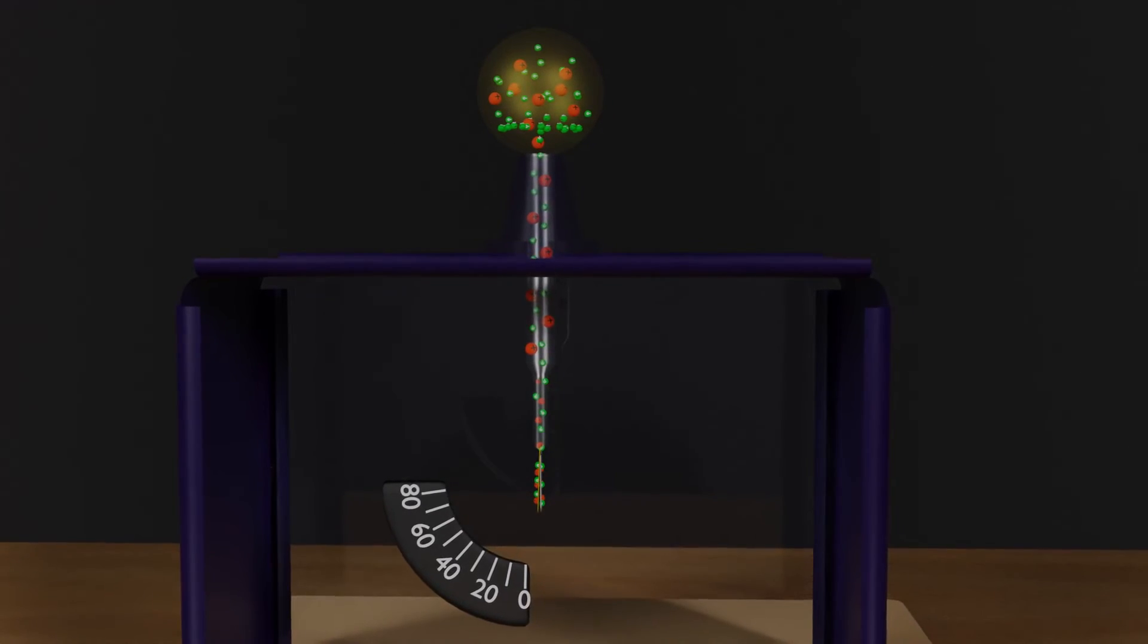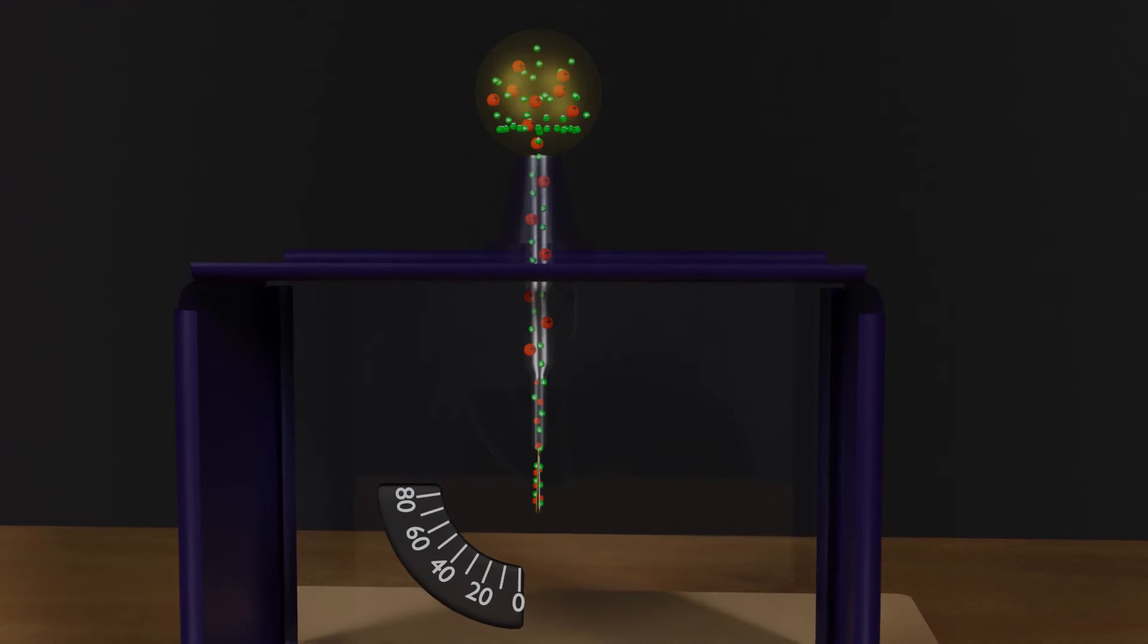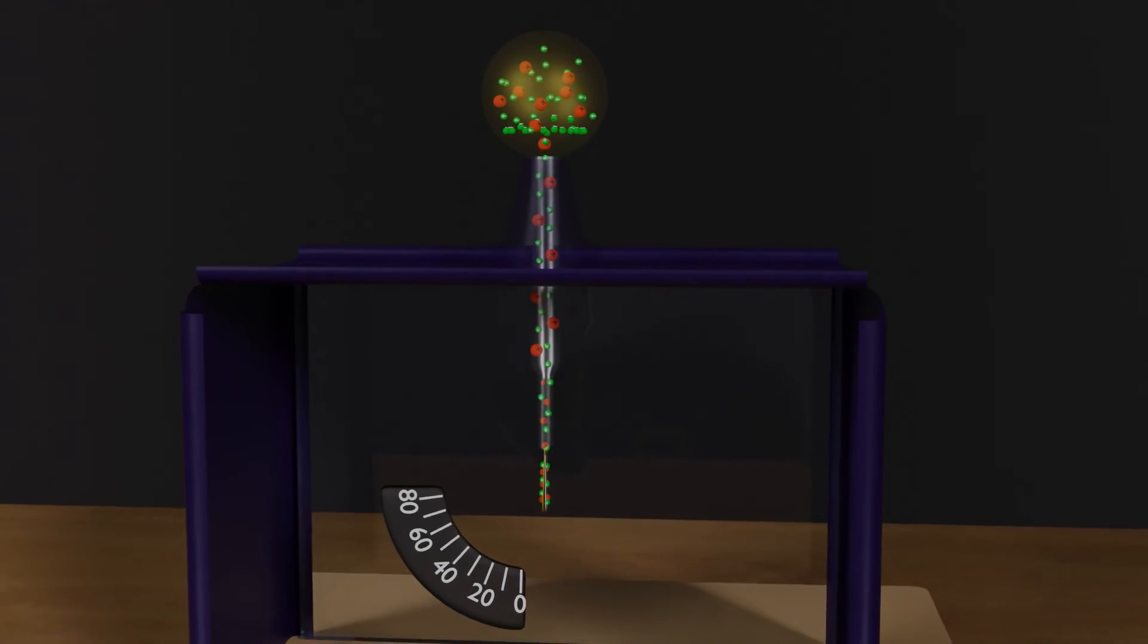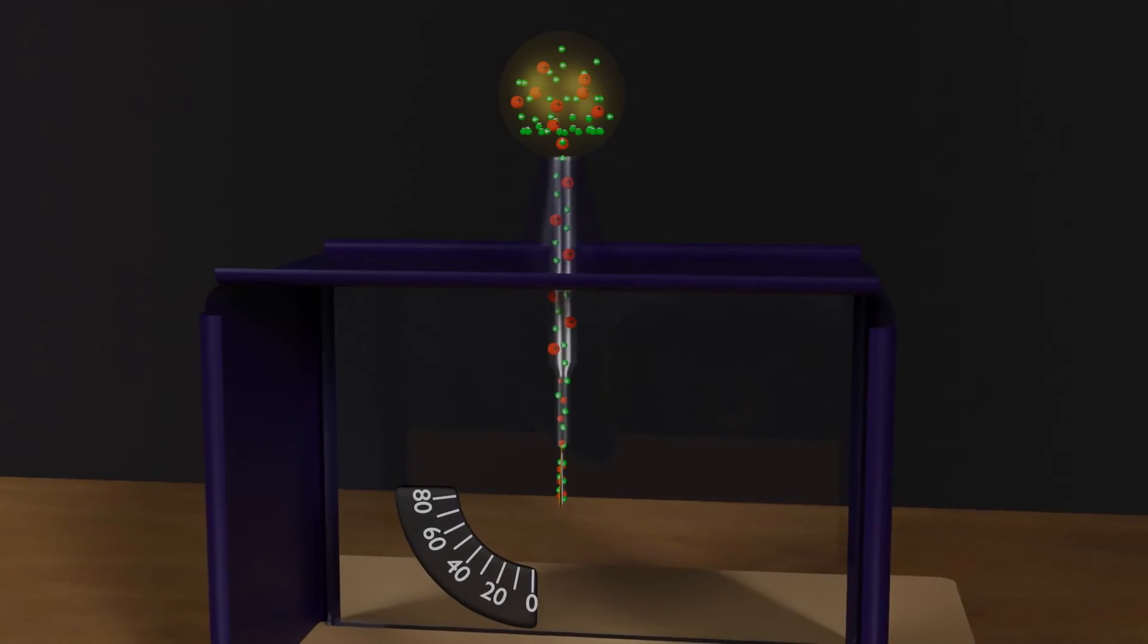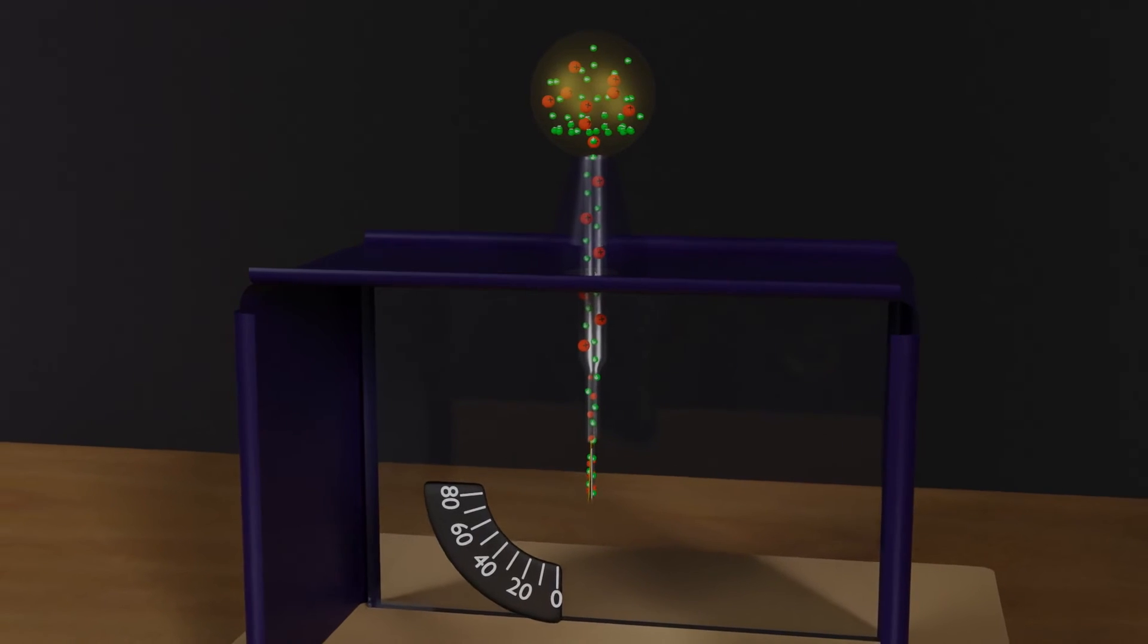But how can we tell if a body has a positive or negative charge? Can the electroscope help us? Yes, it can. Let me explain how.